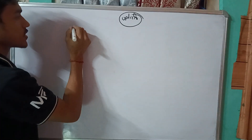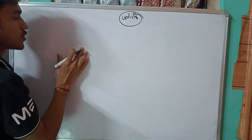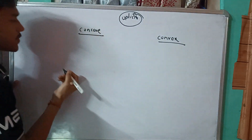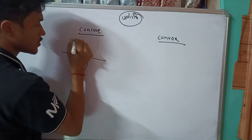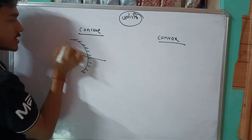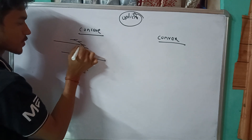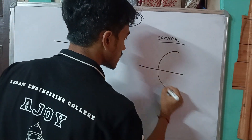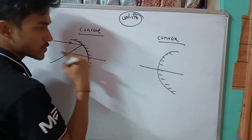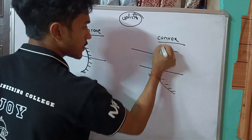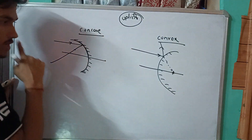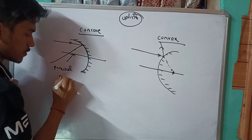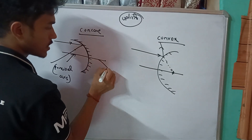Optics is class 3 and the mirror and lens. The inner part is called convex mirror, and the other is called concave. The line through the middle is called the principal axis, and the center point is called the pole.